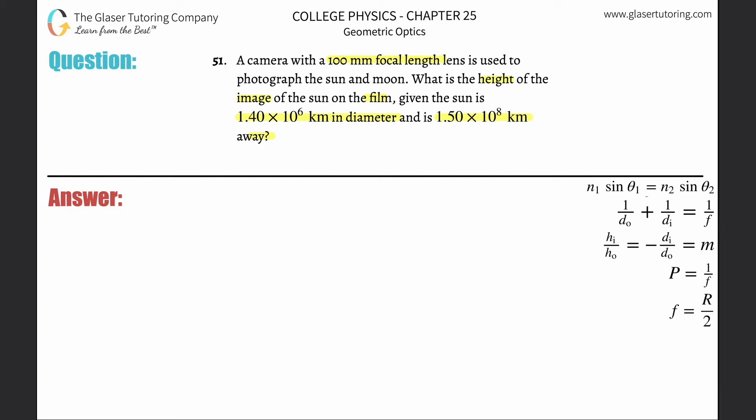We can simplify this into a picture. Here's the lens. They tell us the focal length, that's an inherent property: 100 millimeter focal length. Let's convert that into meters, so 0.1 meters. Then it tells us the sun, so the sun is all the way over here.